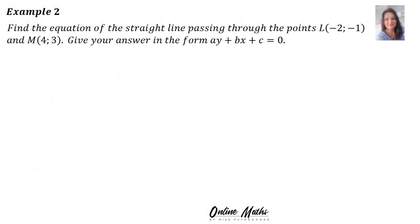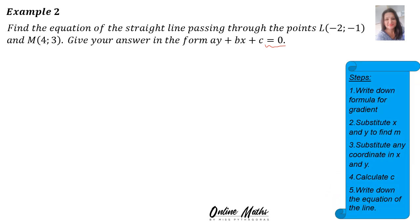Example 2: Find the equation of the straight line passing through the points L(-2,-1) and M(4,3). Give your answer in the form where everything on the left hand side equals 0. Again, there's your steps.